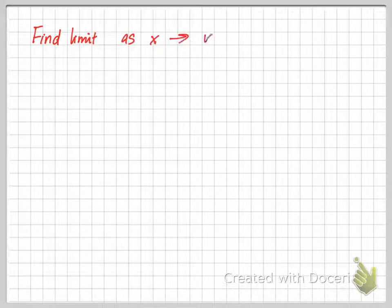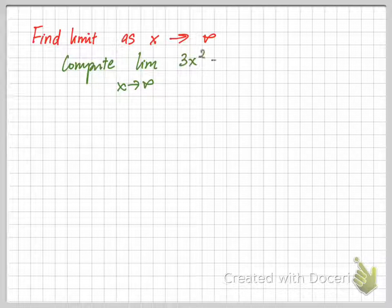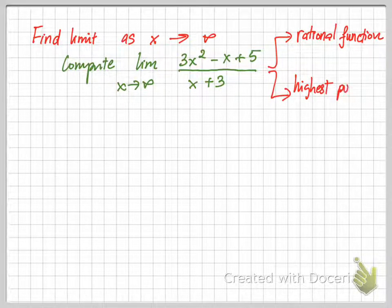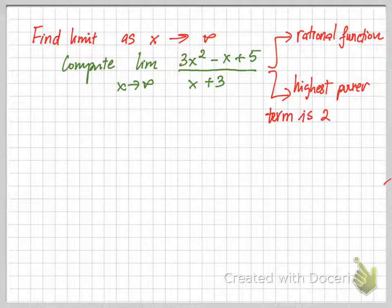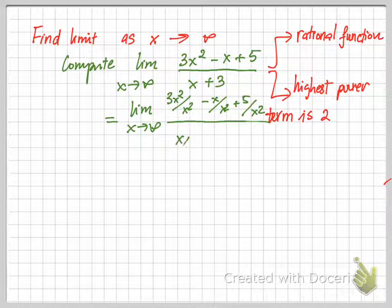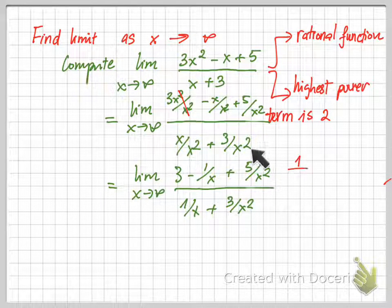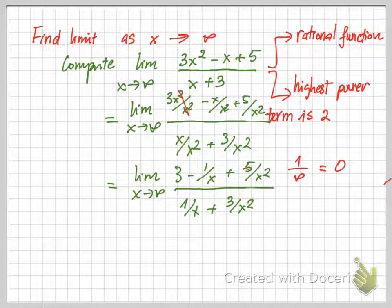The next example asks you to find the limit of a function as x goes to infinity. This rational function has the highest power term x squared as well. Again, you want to divide every single term of the function by its highest term — divide each element by x squared and simplify. The result is a new simplified function.